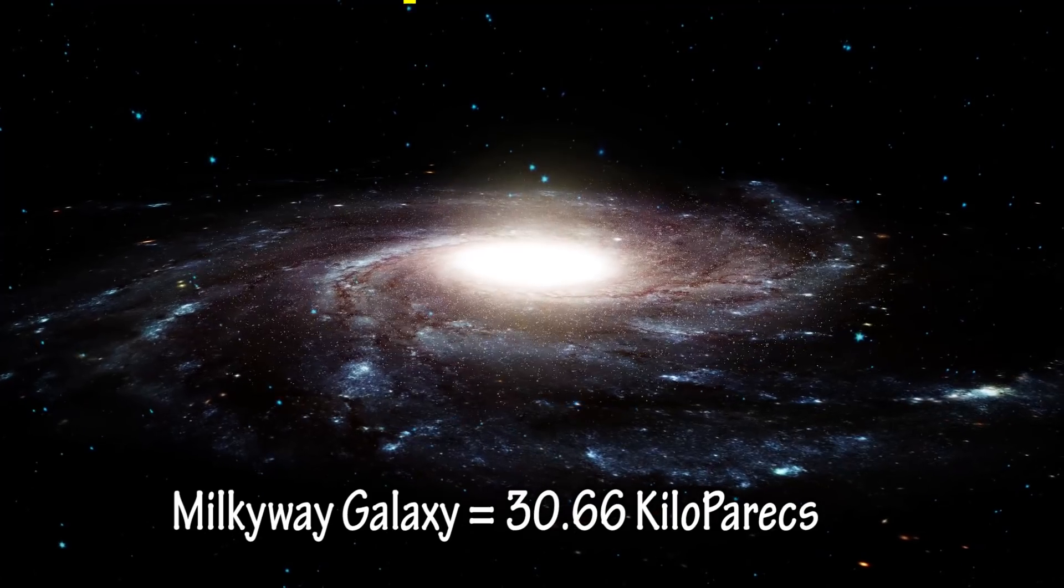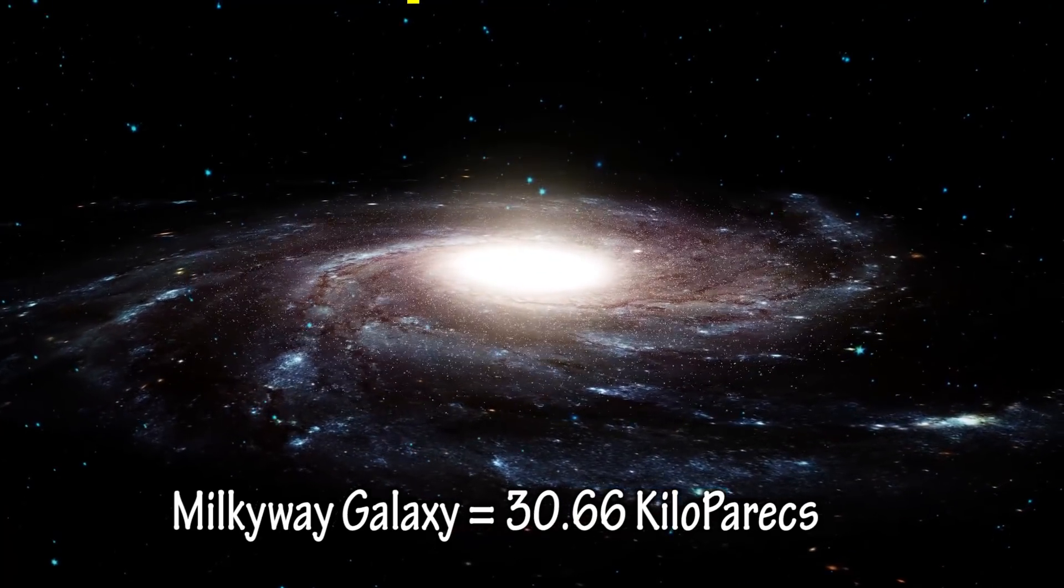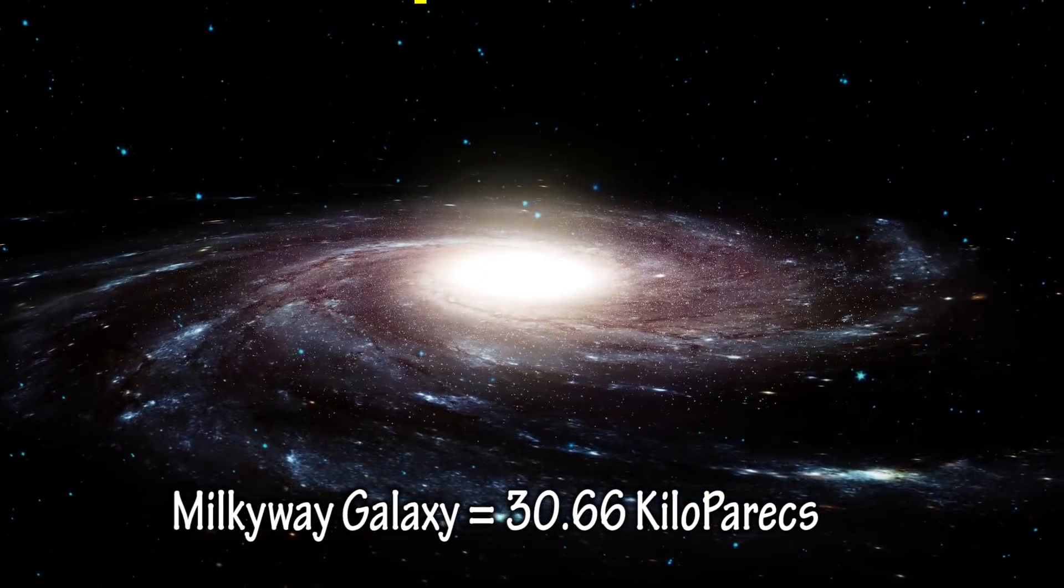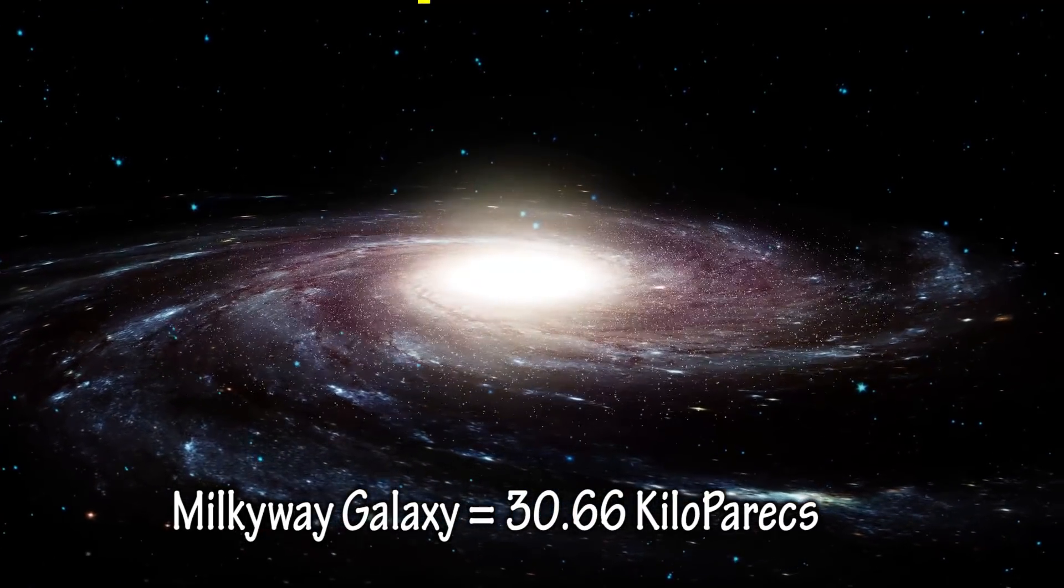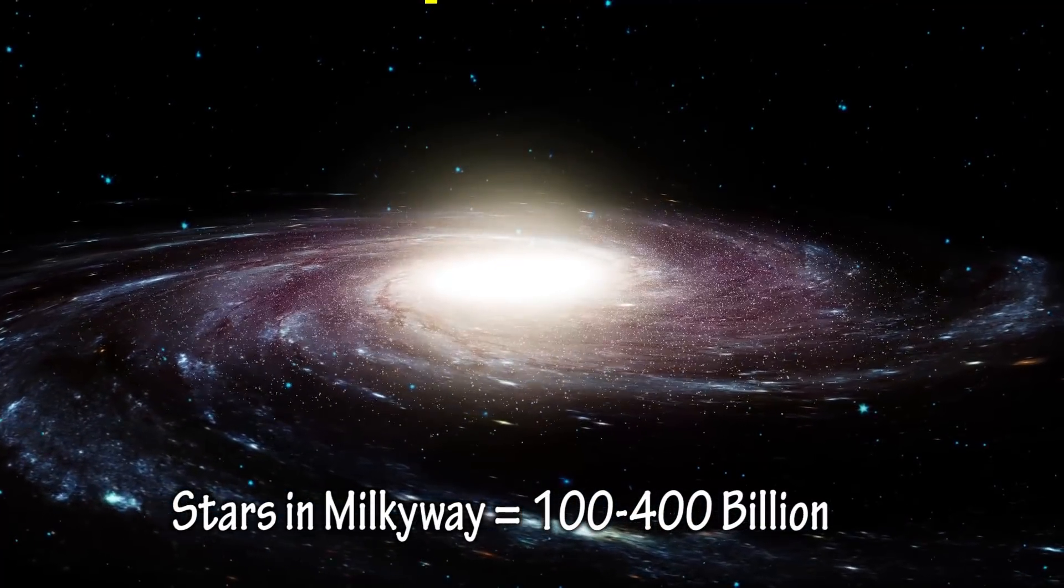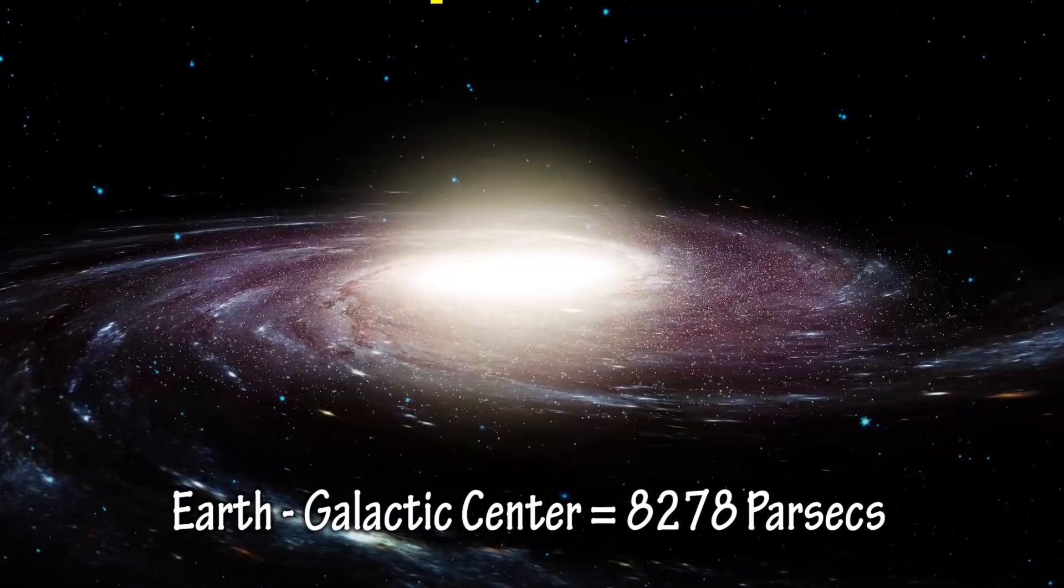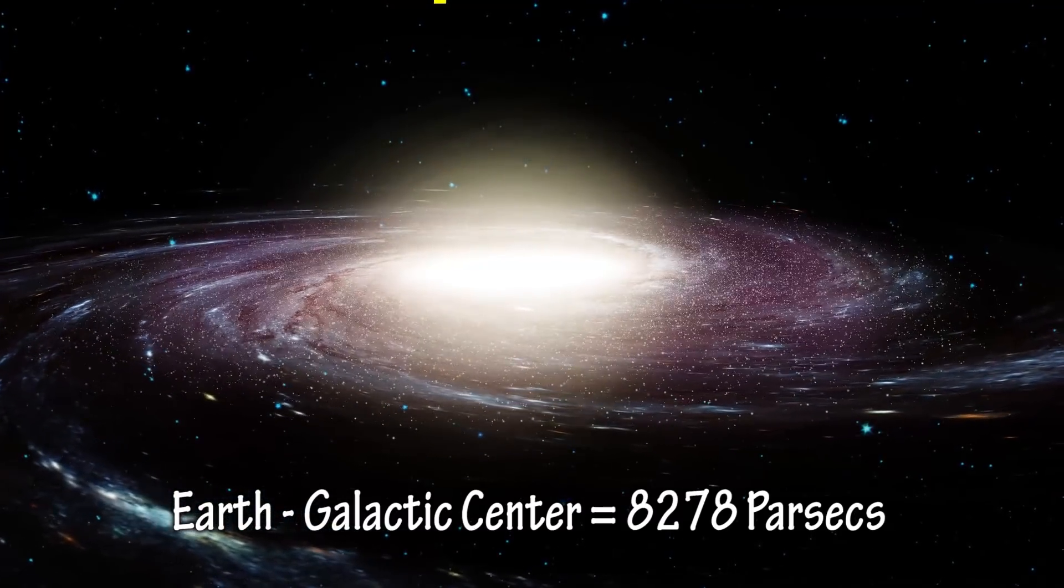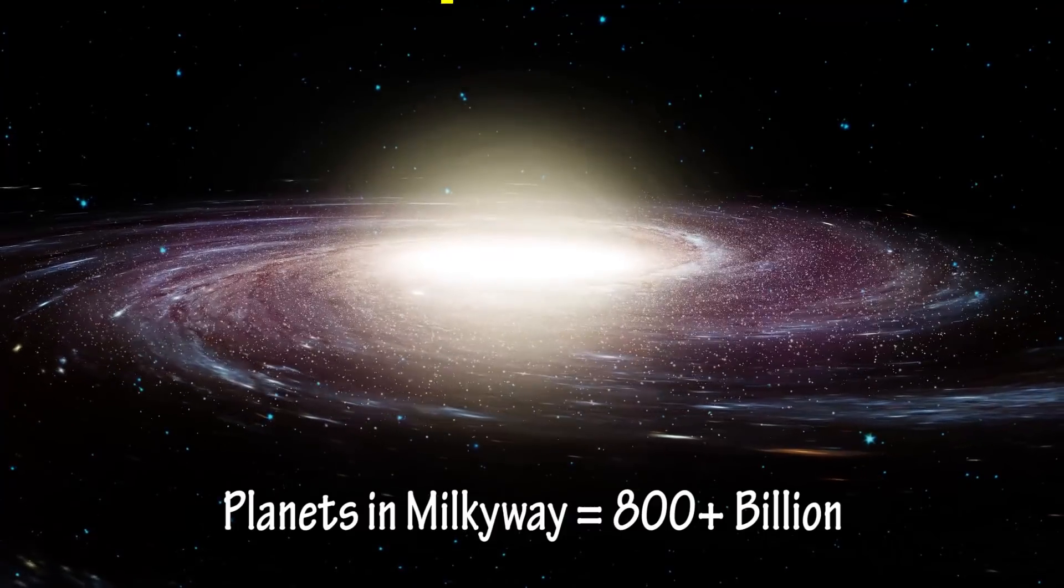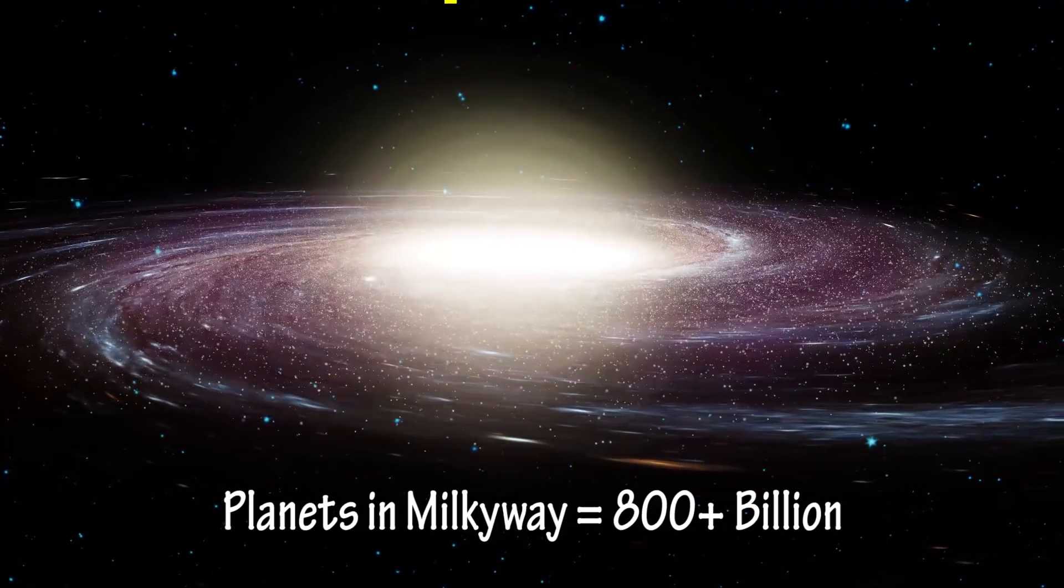Our galaxy is about 100,000 light years in diameter and has roughly 100 to 400 billion stars, with other estimates in the trillions. The distance to the galactic core of the Milky Way from Earth is about 27,000 light years. Current estimates put the number of planets in our galaxy at around 800 billion to 3 trillion planets.